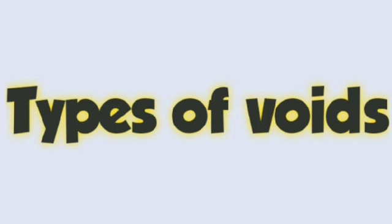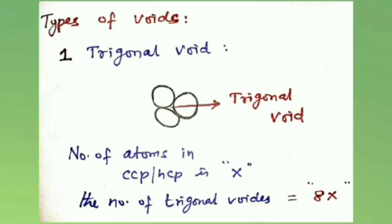Next topic: types of voids. Voids means gaps. The first type is trigonal void. The empty space between three adjacent spheres in a layer of closely packed crystal is called a trigonal void. If the number of atoms in a closely packed crystal (HCP or CCP) is x, then the number of trigonal voids in them is 8x.